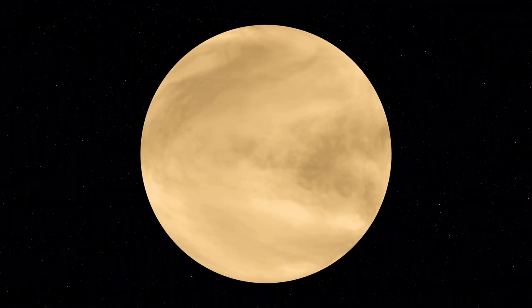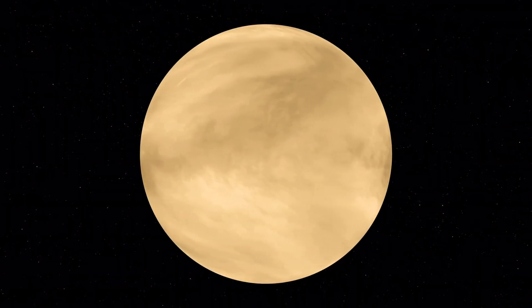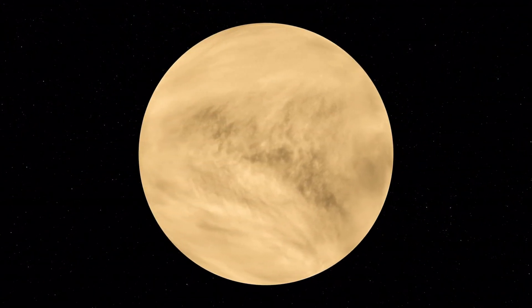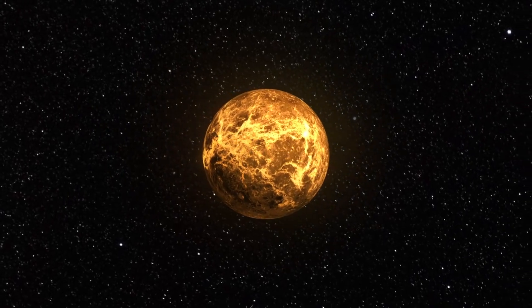Venus, the hottest planet in our solar system, has a thick atmosphere primarily made up of carbon dioxide, despite being slightly smaller than Earth. This causes a runaway greenhouse effect.